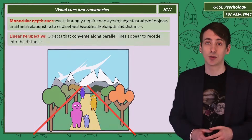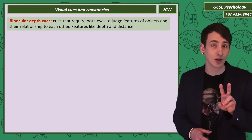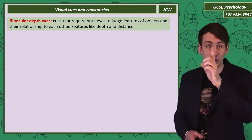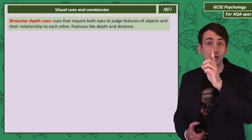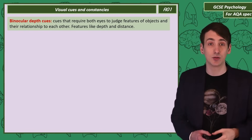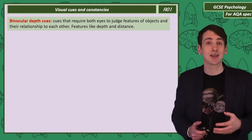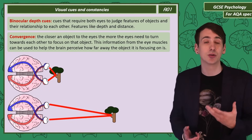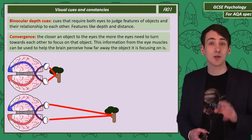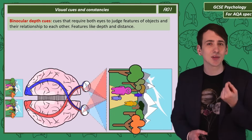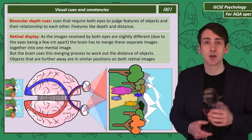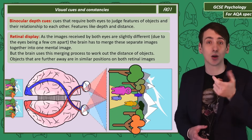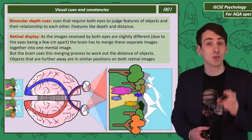Those are monocular depth cues. But the brain also uses the fact that we have two eyes to make assumptions about depth and distance. If you hold your finger in front of your face, focus on it, and then focus on something further away, you can feel your eyes moving together to refocus. The closer an object is to your eyes, the more your eyes need to turn inwards to focus on it, so the brain can use information from the eye muscles to judge distance. Also, as you have two eyes slightly separated, both pick up a slightly different image. The brain merges these into one image, but objects further away appear in similar positions in both versions, and the mind uses that difference to judge distance.